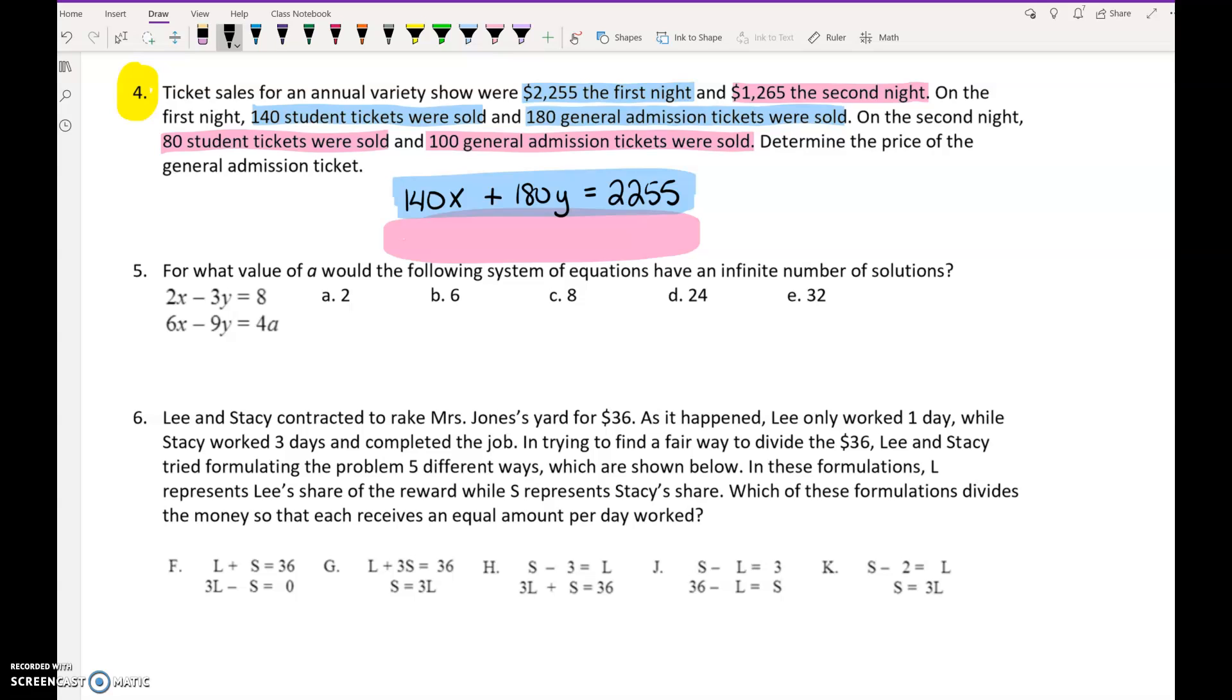Same thing for the second night, number times price equals total amount of money collected. And on the test, you would then be done. You don't have to do anything else, you just have to write those equations. On the test, I think it's something like on Saturday night you sold this many of thing A and this many of thing B and collected this much money. So if you understand how to do this one with the first night, the second night, and the two types of tickets, you should be absolutely fine creating the equations for the problem on the test.